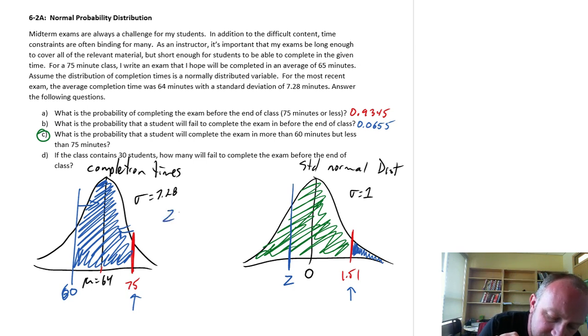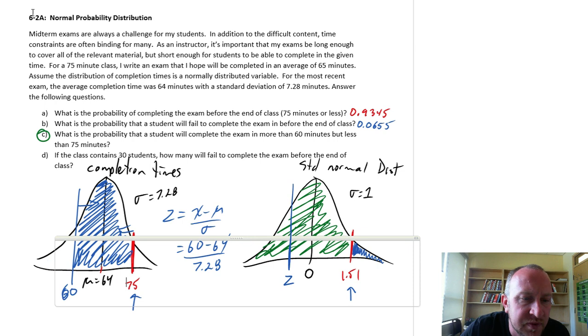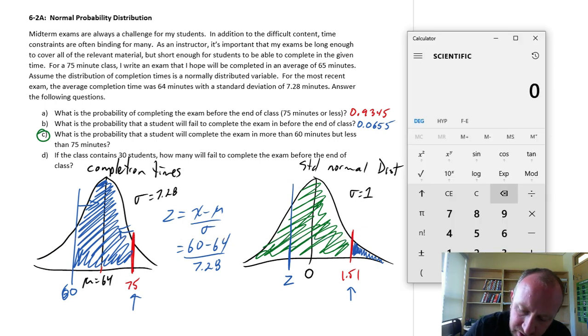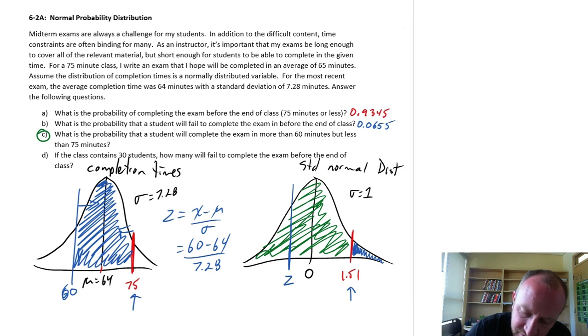So using the same formula as before, x minus mu over sigma. This is 60 minus 64 over 7.28. 60 minus 64 divided by 7.28. So this is negative 0.55.